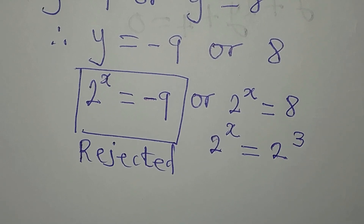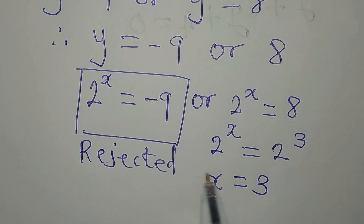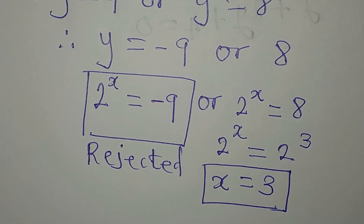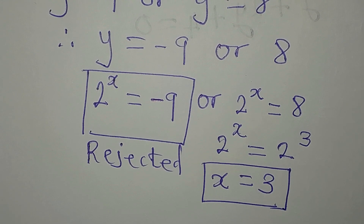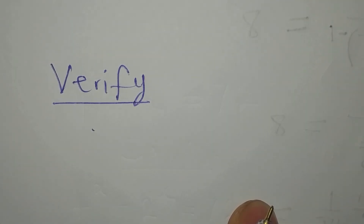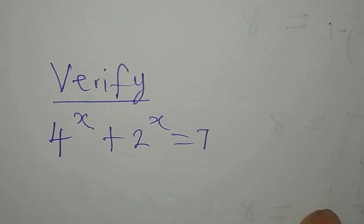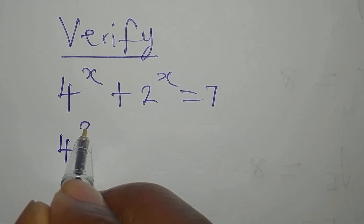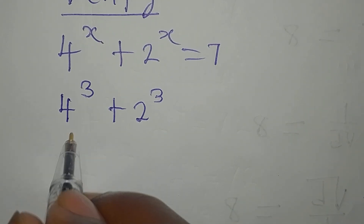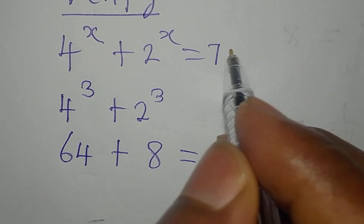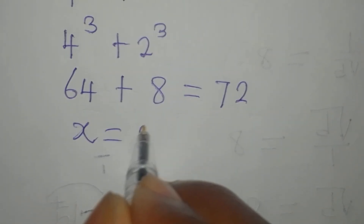Since the bases are the same, the powers must be equal, so x equals 3. Let's verify: substituting back into 4 to the power of x plus 2 to the power of x equals 72, with x equals 3, we get 4 to the power of 3 plus 2 to the power of 3, which is 64 plus 8, giving us 72. This confirms that x equals 3 satisfies the equation.